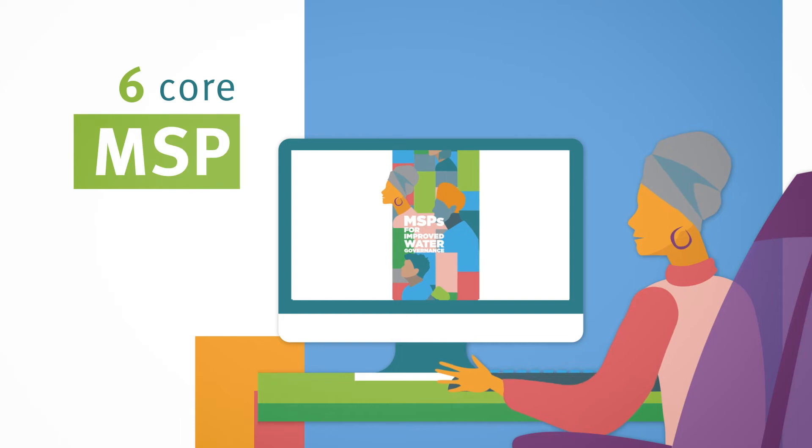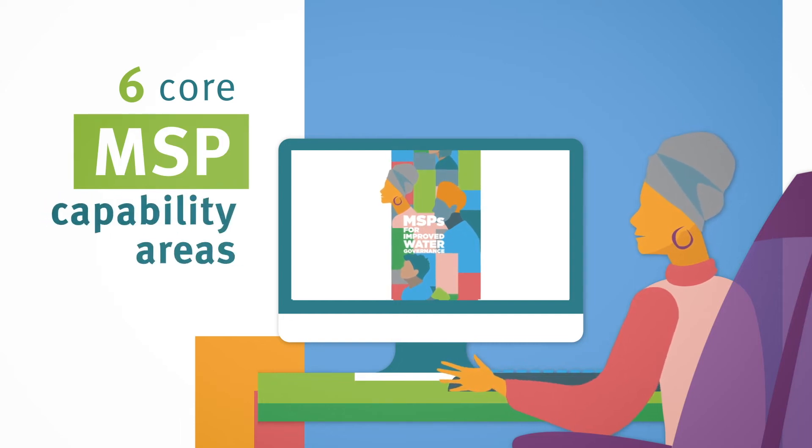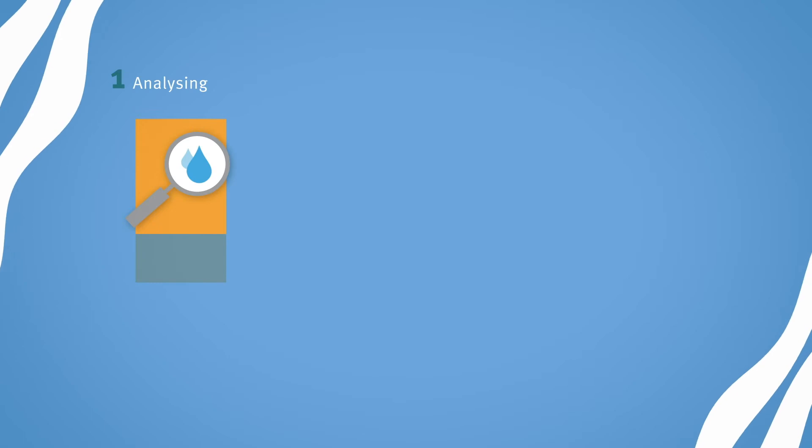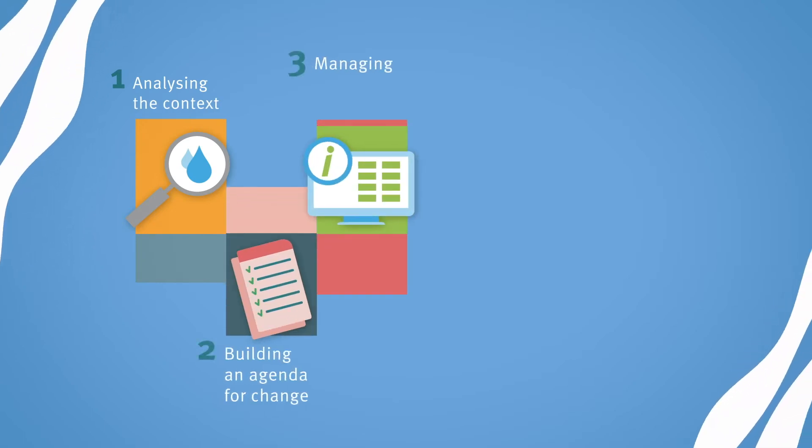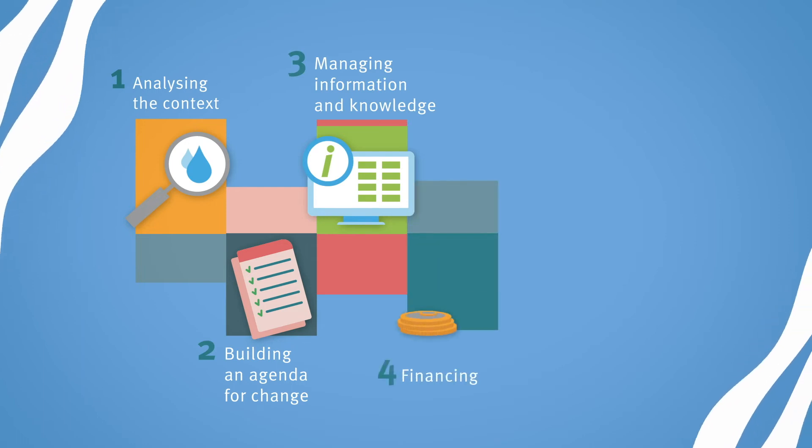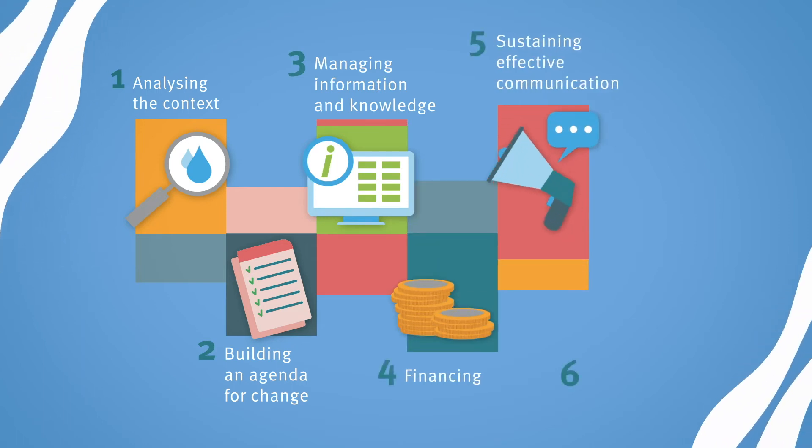Built around the six core multi-stakeholder platforms capability areas, the course addresses analyzing the context, building an agenda for change, managing information and knowledge, financing, sustaining effective communication, and negotiating and managing conflicts.